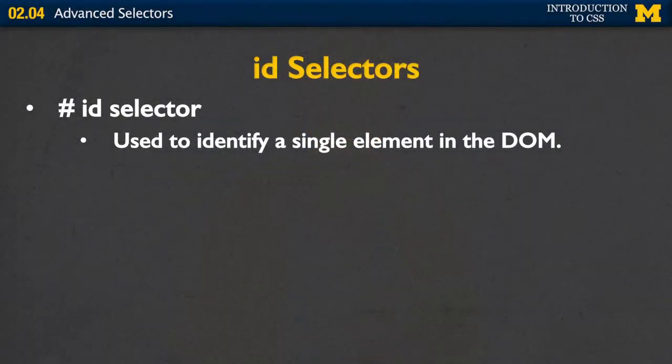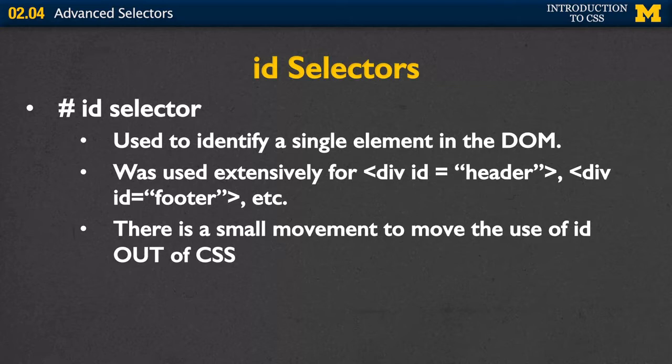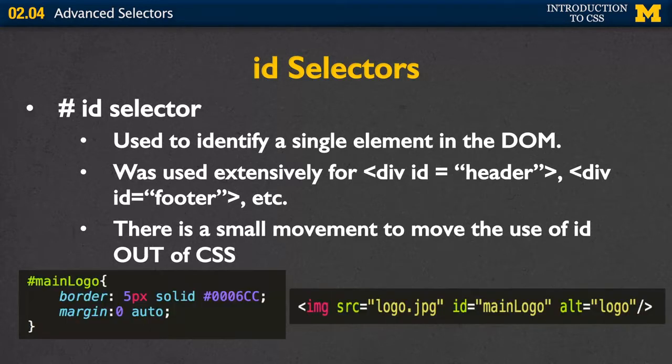Next, we're going to talk about ID selectors. IDs are used to identify a single element in the DOM. In your HTML you would write something like ID equals header or ID equals footer. Then in your style sheet, using the pound symbol, you can identify which elements you want to style. There is a small but growing movement to move away from using IDs in CSS, since many people use IDs primarily for JavaScript. But you're going to see it a lot, so let's look at a quick example of how it works.